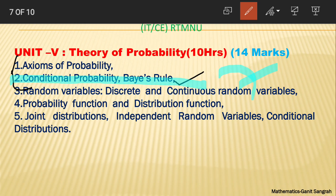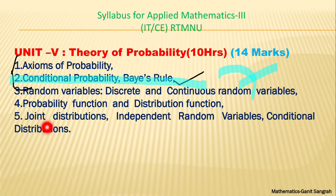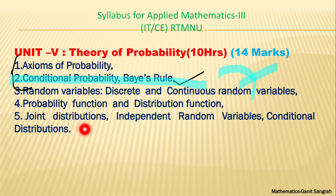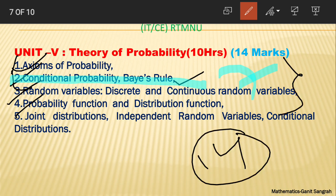After that, you need to find probability function and distribution function — topics 3 and 4 are essentially one topic. Then joint distribution, independent random variables, and conditional distribution. In joint distribution, you need to look at two random variables — both continuous and discrete — which gives two topics. The conditional distribution is a slight extension. For the either part, do topics 1, 2, 3, and 4, and your 14 marks are easily covered. The remaining part goes into the or part.